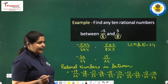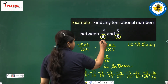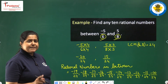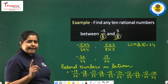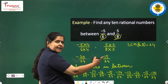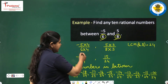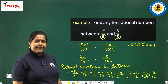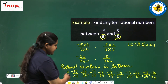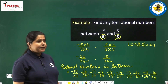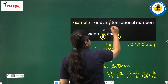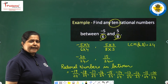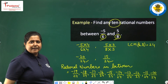Let us revise how we did this. First, look at the denominators — if they are different, make them the same by taking the LCM. The LCM came out to be 24, so we made both denominators 24. Now we can easily find rational numbers in between. We were asked for 10 rational numbers, so we wrote 10, and you are free to choose any 10 among them.